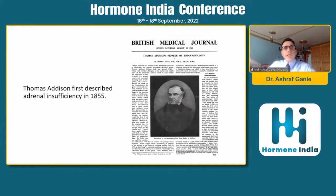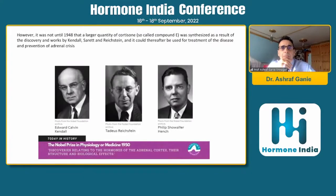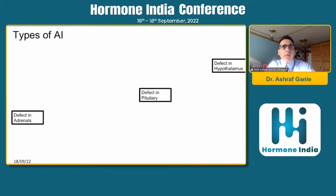Thomas Addison is credited with the description of adrenal insufficiency in 1855. There have been many scientists who contributed, but the name comes from Addison's description. Dr. Kendall, Reichstein, Hench, and many others have received the Nobel Prize in Physiology and Medicine for describing various aspects of adrenal physiology and hormones.